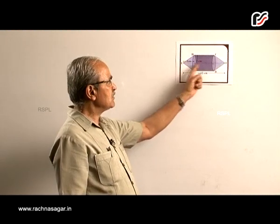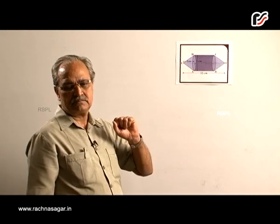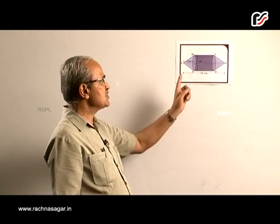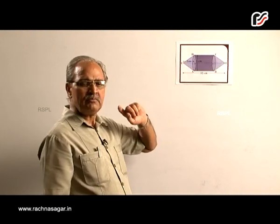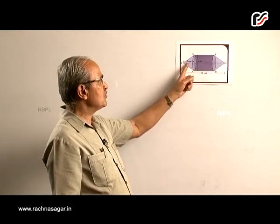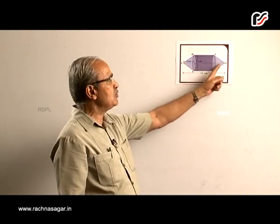That means we have to find out the total volume. I hope you can also judge. When we are talking about total volume, it will be volume of this cone plus volume of cylinder plus volume of this cone.